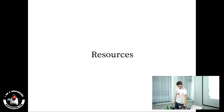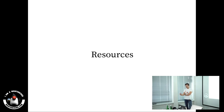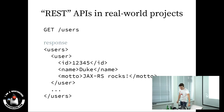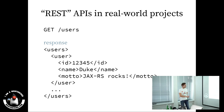What REST is about is resources — every URL should represent some resource, and resources should represent your business domain objects. If you have something like Amazon, you have articles, books, users — real objects. These objects should be represented via your URLs. So you have a resource with a list of users, and to get all users you call GET — not POST — on the users resource.